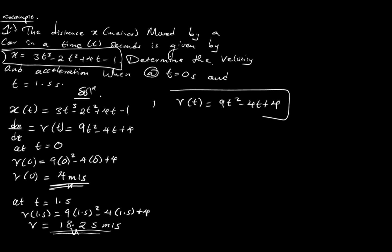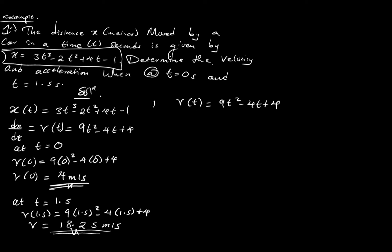To find acceleration, we differentiate the velocity function with respect to time: dv/dt gives the acceleration as a function of time. Differentiating v(t) = 9t² - 4t + 4 using the power rule — since these are polynomial functions — gives the acceleration function a(t) = 18t - 4.